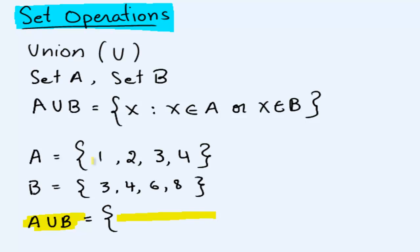Well, 1 appears in one of our sets, so it's going to be in the union. 2 is in one of our sets, so 2 is going to be in the union. 3, 4, 6, and 8 are going to be in our union.